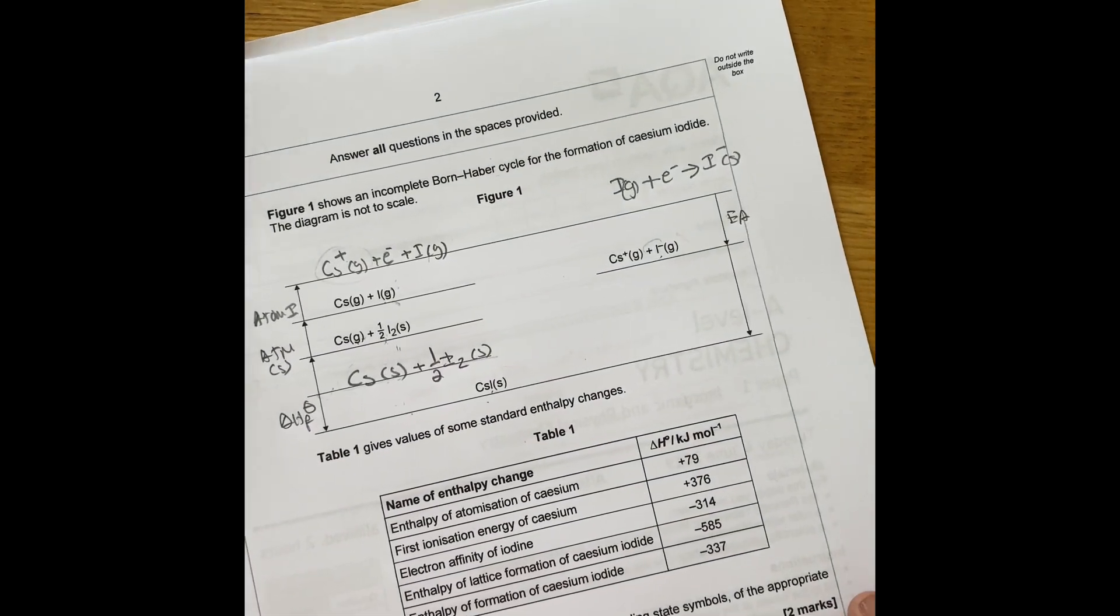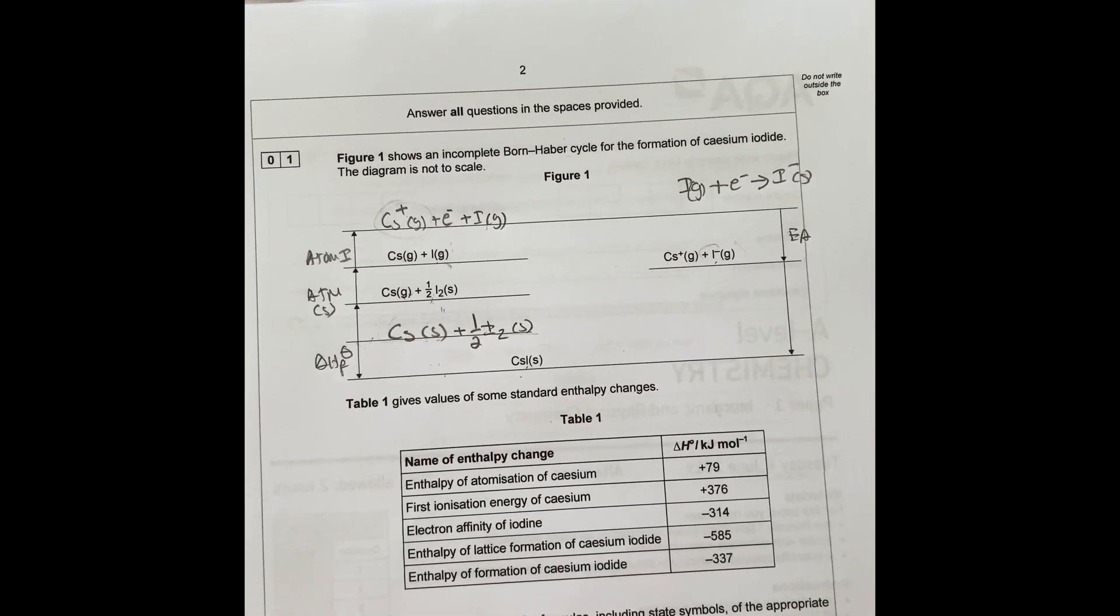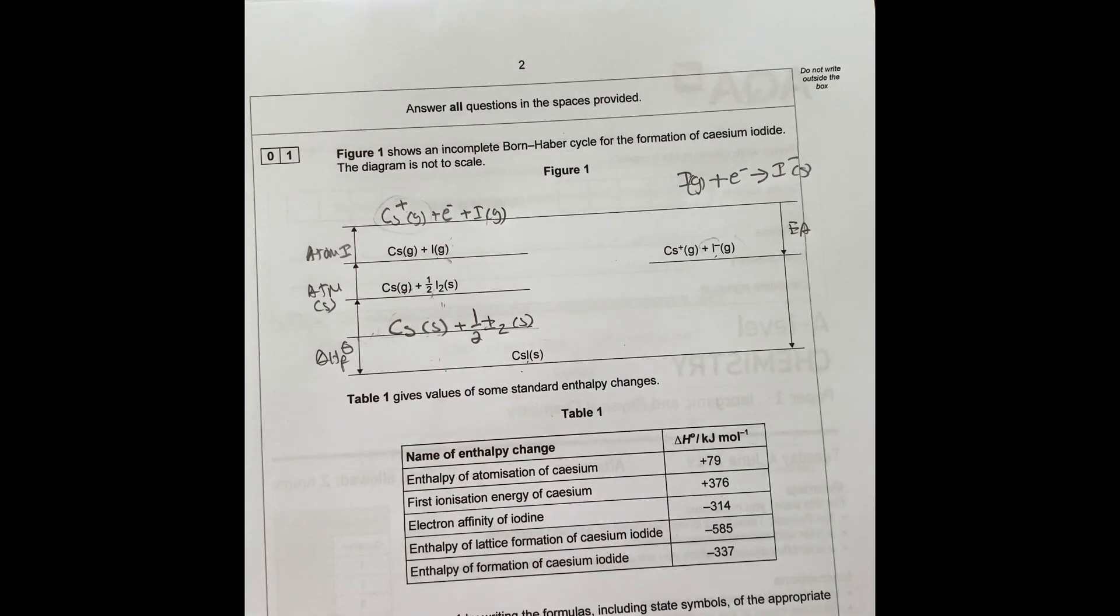It becomes iodine minus gas. So you add that plus that, it gives you that. And then cesium stays the same. So your cycle is completed.